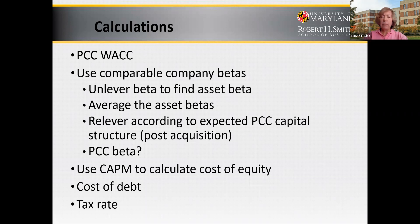Go back to those notes and look at how you can unlever beta, then average the betas and re-lever according to the capital structure of Berkshire Hathaway. In the case, you're also given financial statements of Berkshire Hathaway and Precision Castparts — stock prices, number of shares — so you can get all the information you need to calculate the expected capital structure.